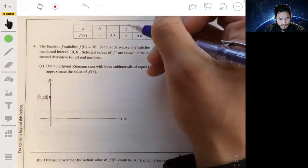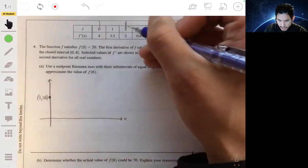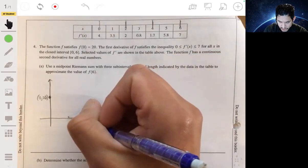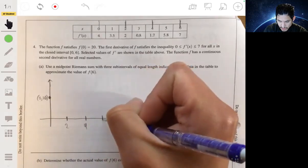And we're going to break it into three subintervals. So from 0 to 2, from 2 to 4, and then from 4 to 6. So let's do that at 2, 4, and 6.